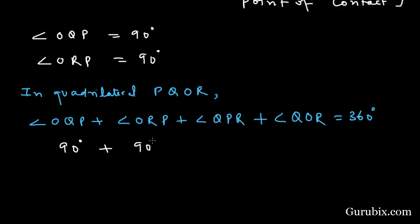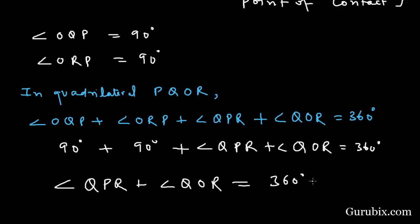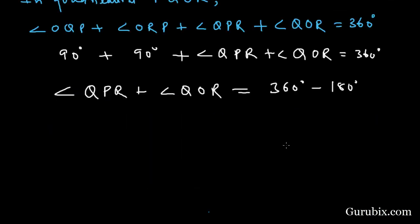These two angles are 90 degrees, this is also 90 degrees. So we have 90 degrees plus 90 degrees plus angle QPR plus angle QOR equals 360 degrees. This means angle QPR plus angle QOR equals 360 degrees minus 180 degrees, so this equals 180 degrees.